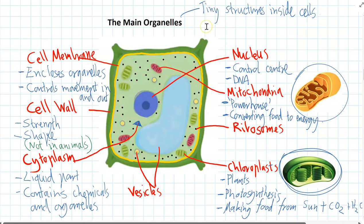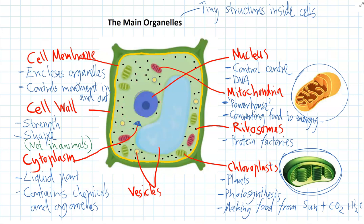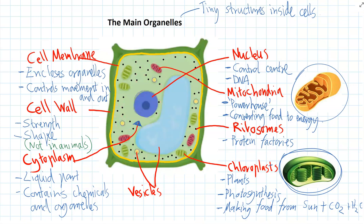The tiny little black dots — the smallest of all the organelles — are called ribosomes. These are really important factories where proteins are made, so you can just call them protein factories. Proteins are the molecules that are basically doing everything in the cell. They make up other organelles, do all the chemical reactions, store things, and transport other chemicals. Proteins do everything — they're like the workers of the cell.